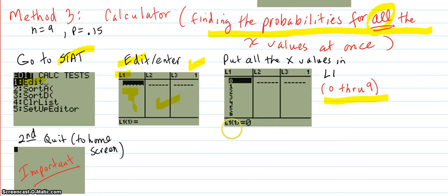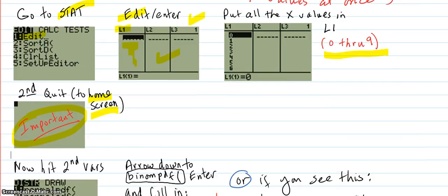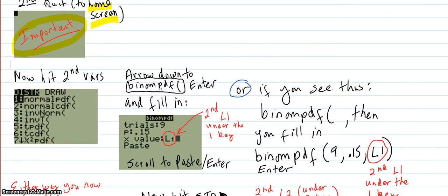You put those in. That's in L1. Then this is an important step. You hit second quit to go to the home screen. That's important. Otherwise things are going to get messed up. So now you're fresh on the home screen and there's nothing else on there. So now you go down here.